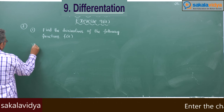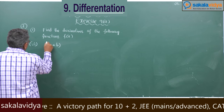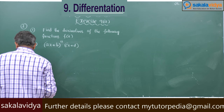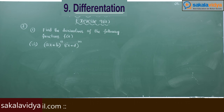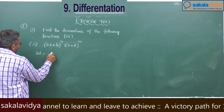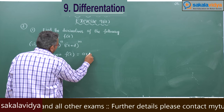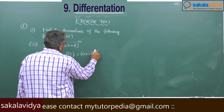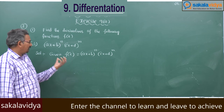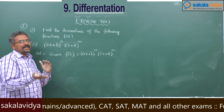Sixth problem. f(x) = (ax + b)^n · (cx + d)^m. Before solving, some problem-solving techniques need to be practiced here.